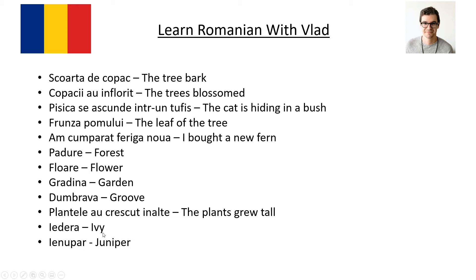Iedera is ivy — you know, it's this plant which grows on buildings. Some buildings are very nicely covered in a cloak of ivy. And juniper is ienupăr. This is kind of specific, you don't really need to learn it, but just hear how it sounds: ienupăr.